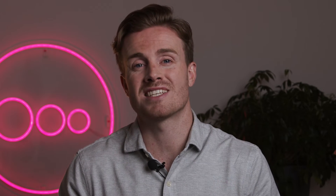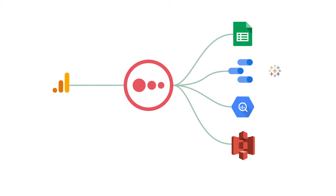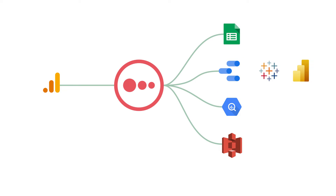This allows you to call on that data whenever you need — whether sharing it into a Google Sheet for quick ad-hoc analysis, into a visualization tool like Google Data Studio, Tableau, or Power BI for year-on-year analysis, or even sharing it with a data warehouse like Snowflake or Google BigQuery if your data team wants to do something more complex like modeling.